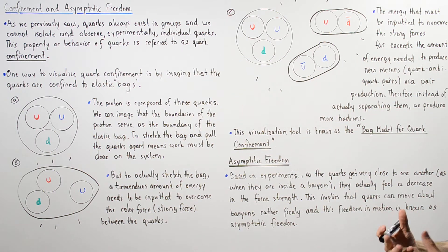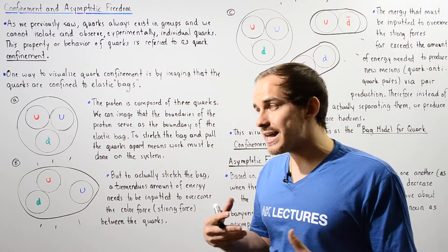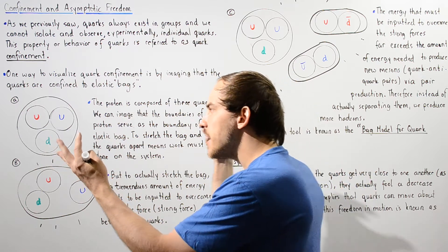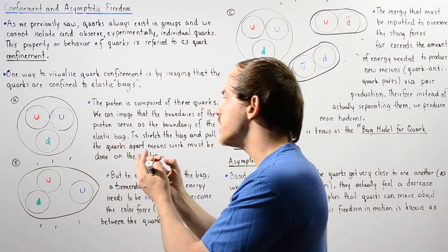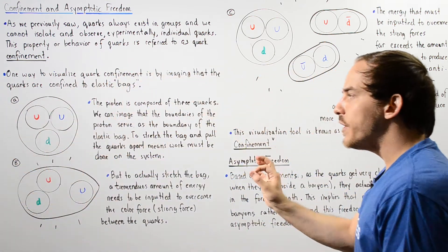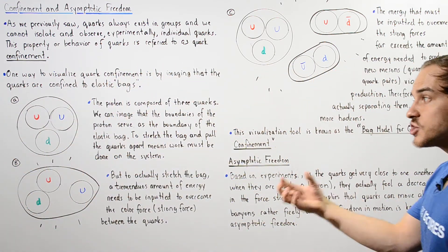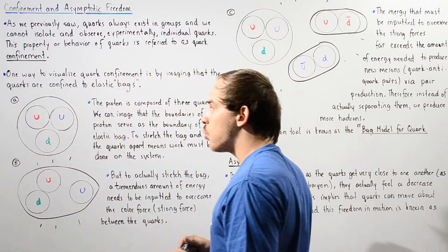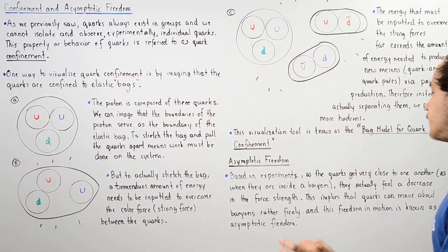Based on experimental evidence and experimental results, we see that as the quarks actually get very, very, very close to one another, when they get close enough to form our proton, the color force or strong nuclear force between these quarks actually ends up decreasing.